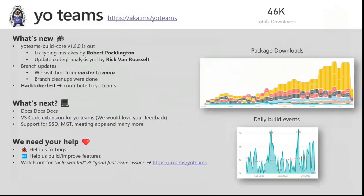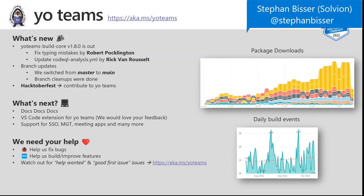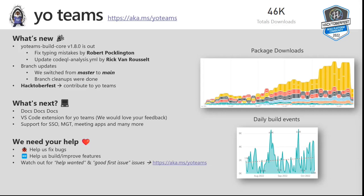Moving to Yo Teams with Steven. We still see a lot of growth in usage. Version 1.8.0 of Yo Teams build core was released with minor typing fixes by Robert and a CodeQL analysis update by Rick. The team also did repo cleaning and switched from the master to main branch. They're discussing what to focus on next — more docs, tutorials, and VS Code extension support — and would love community feedback on GitHub issues.